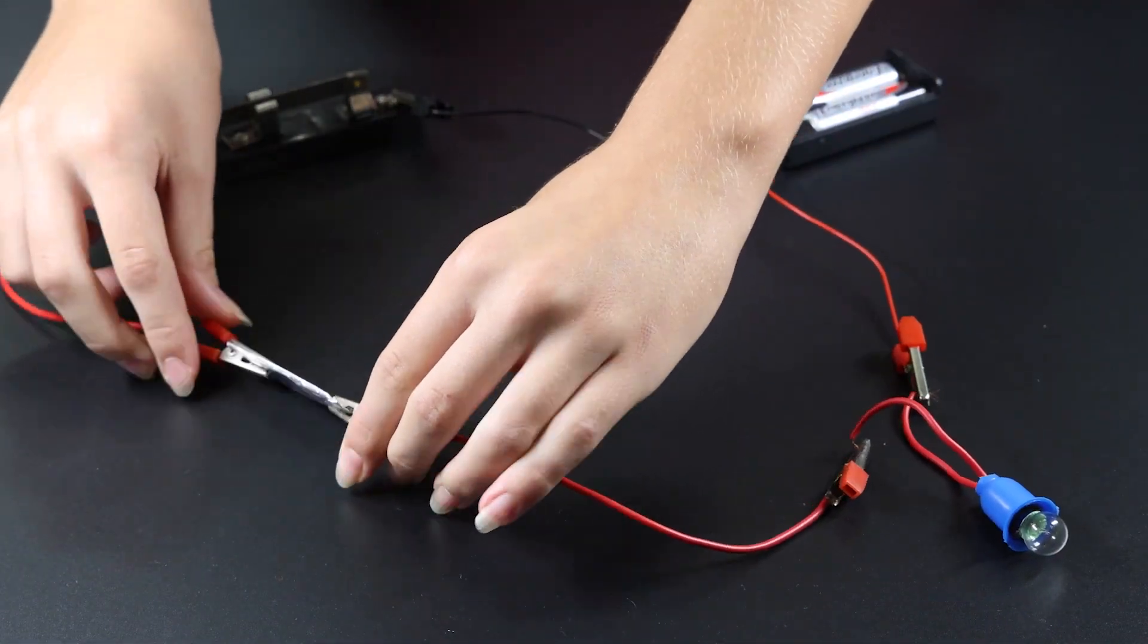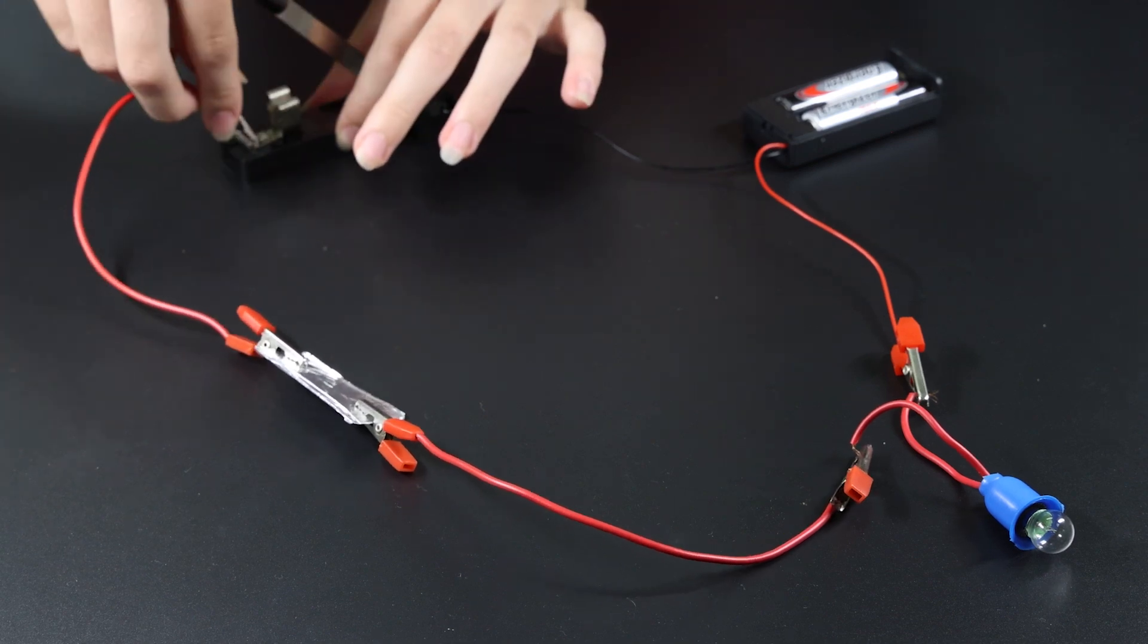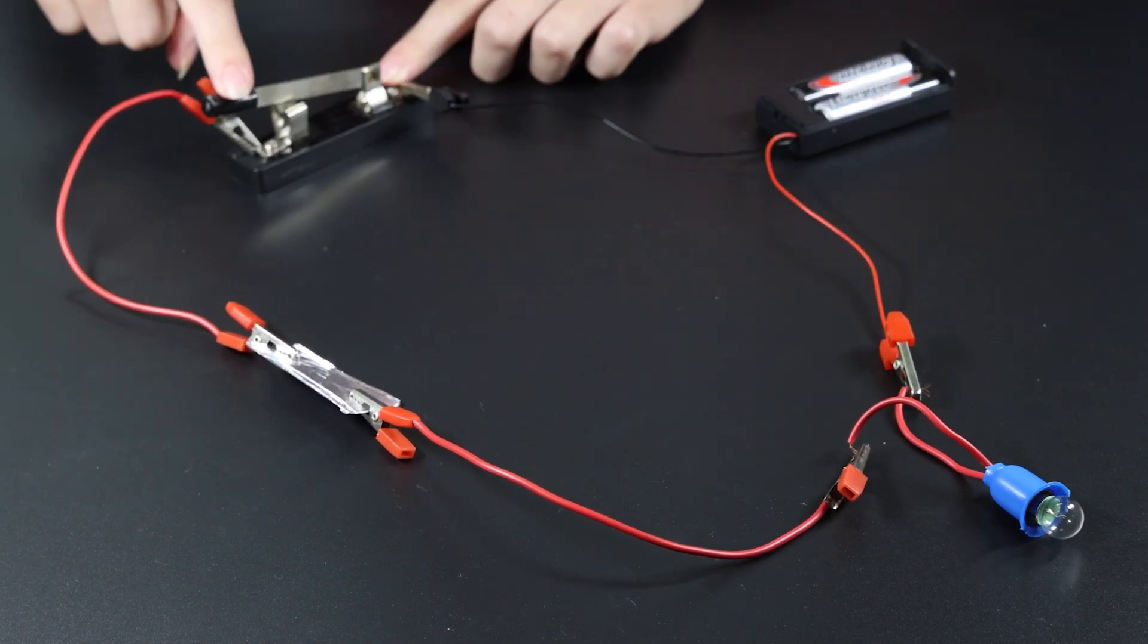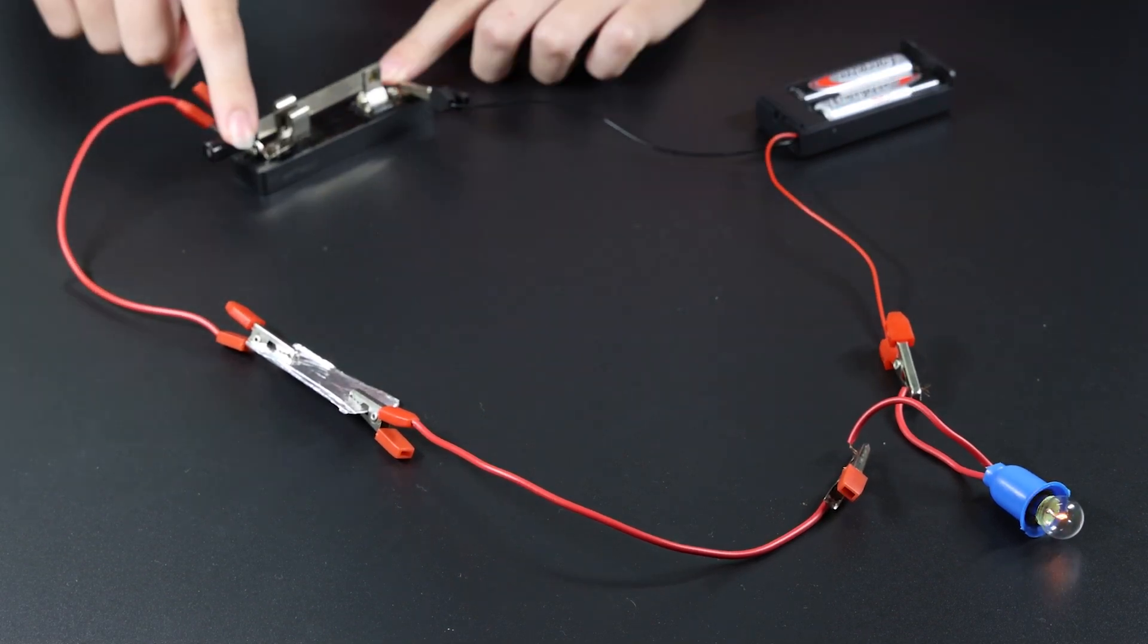When aluminum is placed between the alligator clips and the switch is closed, the bulb lights up, indicating that the foil is an electrical conductor.